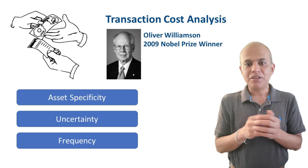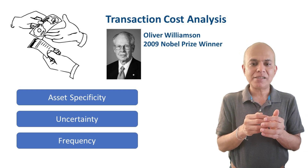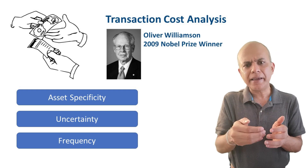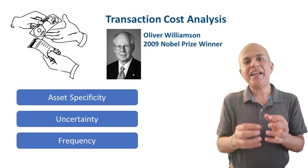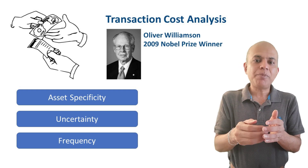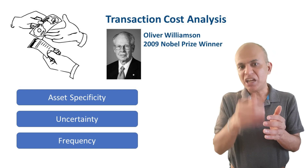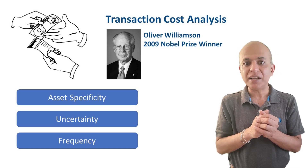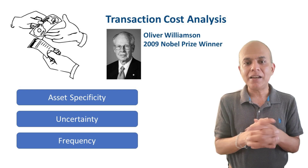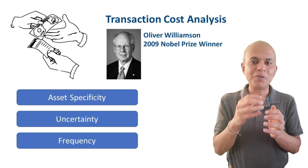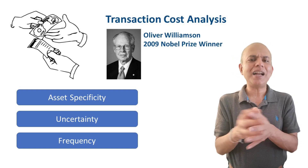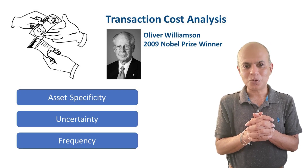The third part is frequency. The frequency driver says that if a business can perform a process repeatedly again and again, it provides a chance to learn and improve. So if any process is highly repetitive, we can consider insourcing it. And if a process is done at low frequency — rarely — we could consider outsourcing it.